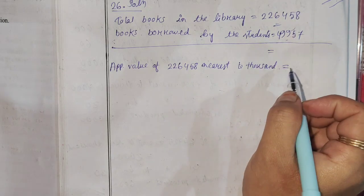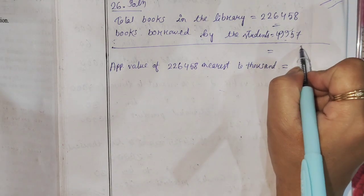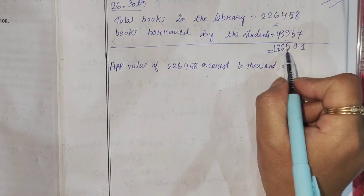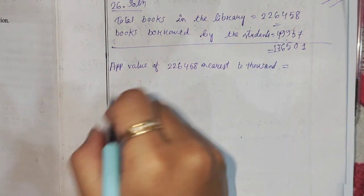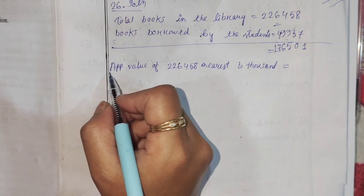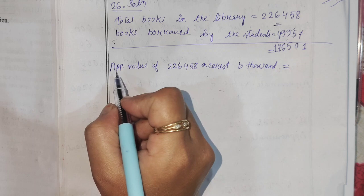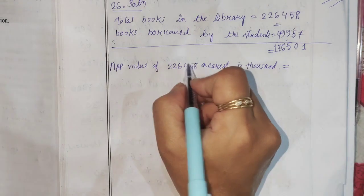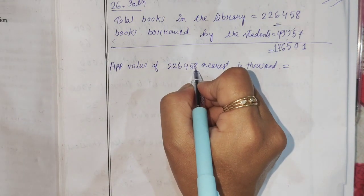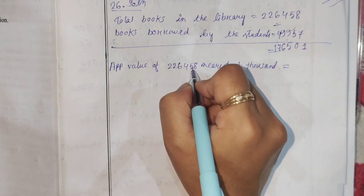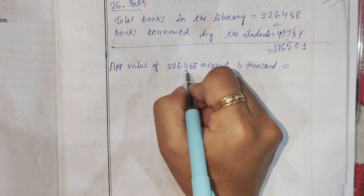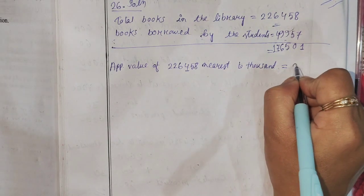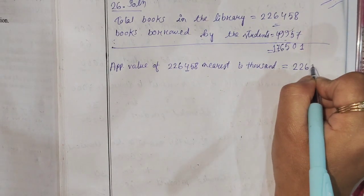This is the minus calculation. The minus result is 1,76,504. The approximate value of 2,26,458 nearest to 1,000 is 2,26,000.